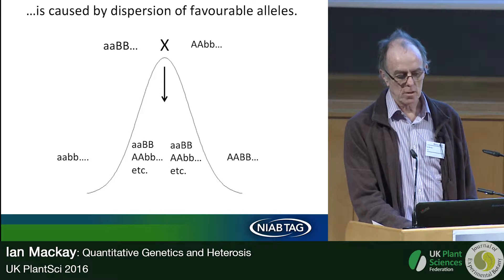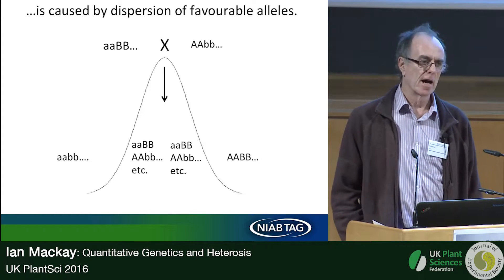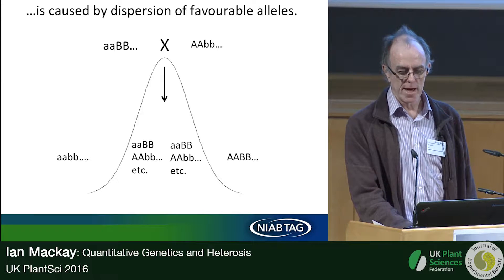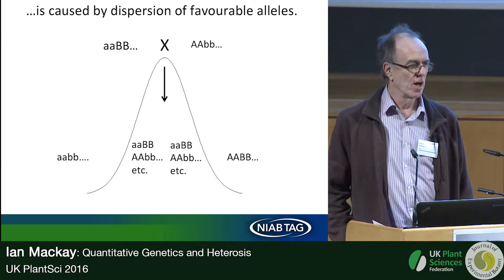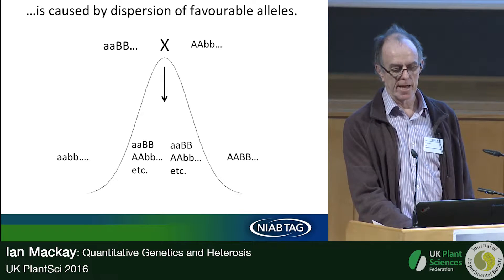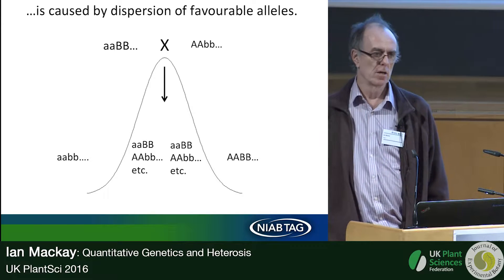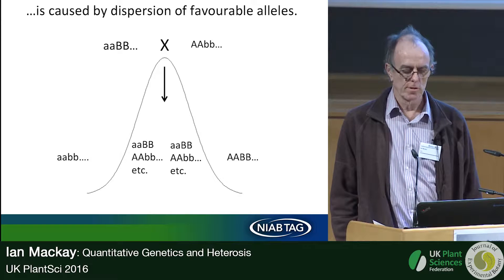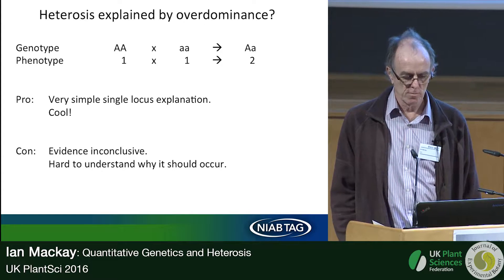This transgressive segregation is caused by the dispersion of favorable alleles between the two parents. Illustrated here: two inbred parents each with two loci — an A locus and a B locus. Capital letters increase the trait value, lowercase letters contribute nothing. The cross will be made and the breeders will identify some low-frequency lines that have a greater proportion of capital letters than the best parent. Without transgressive segregation plant breeding doesn't work — we know it does, therefore there is transgressive segregation.